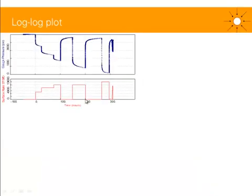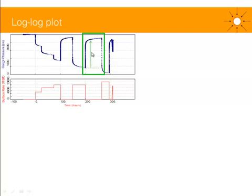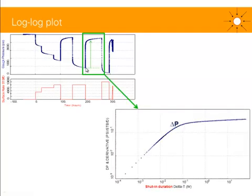Let's have a look at the well testing tools, and the first one is the log-log plot, also called the derivative plot. Here I've got my gauge pressure with three PBUs. For this particular PBU, for example, I can plot this pressure signal, which is pressure T minus pressure shut-in, and this is called the delta P plot.